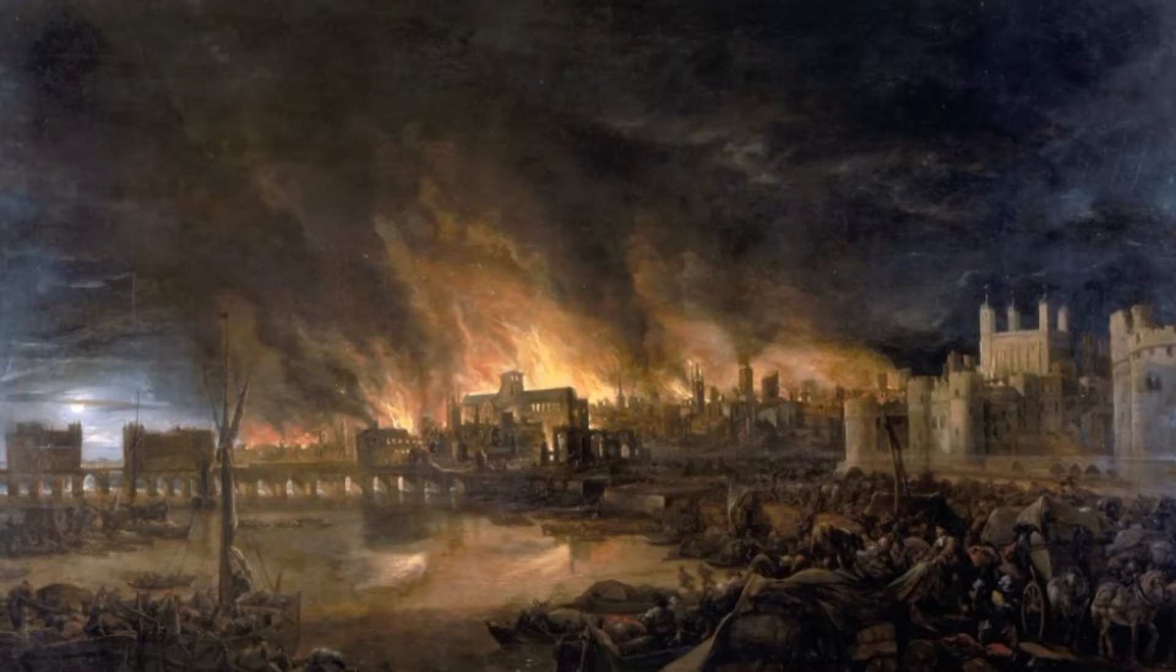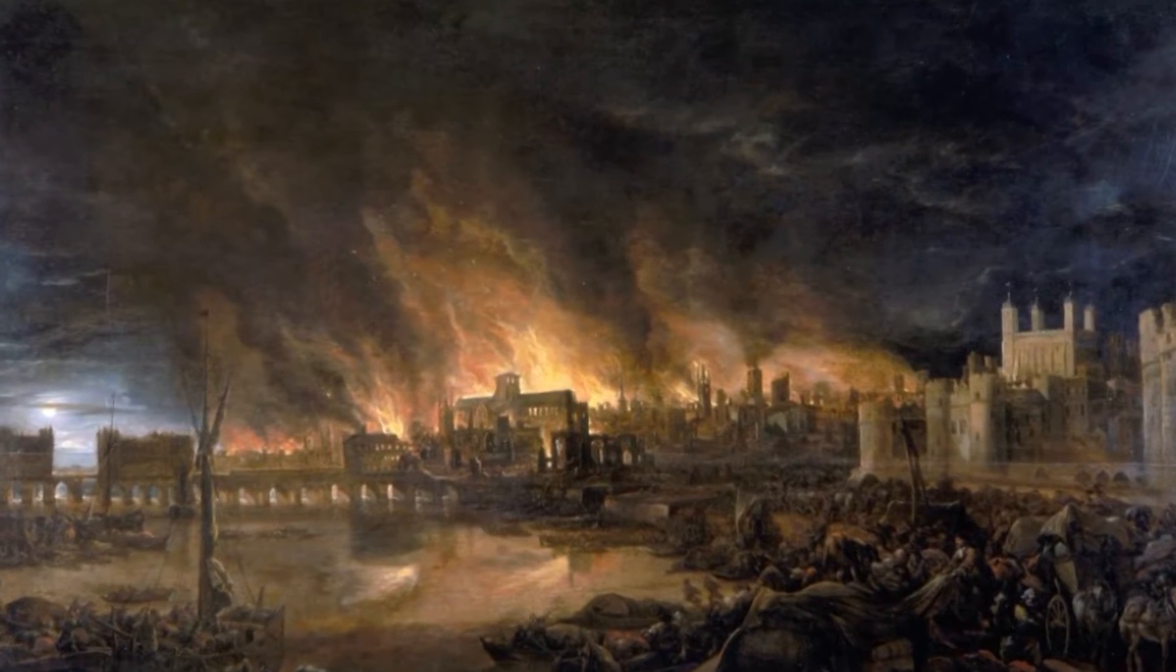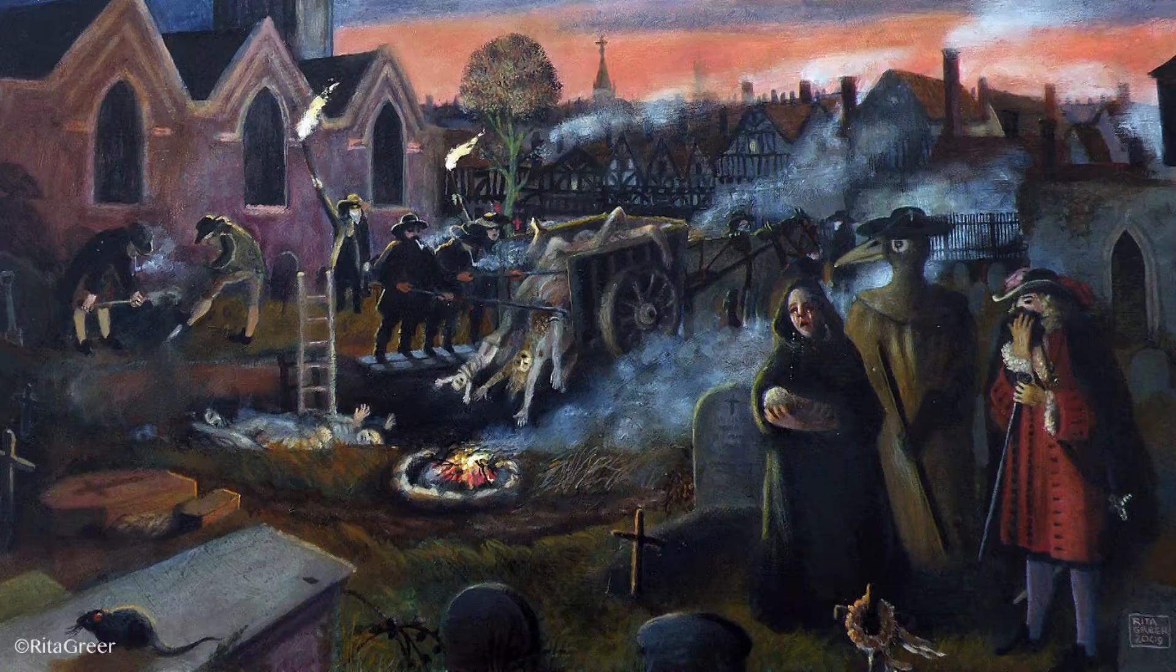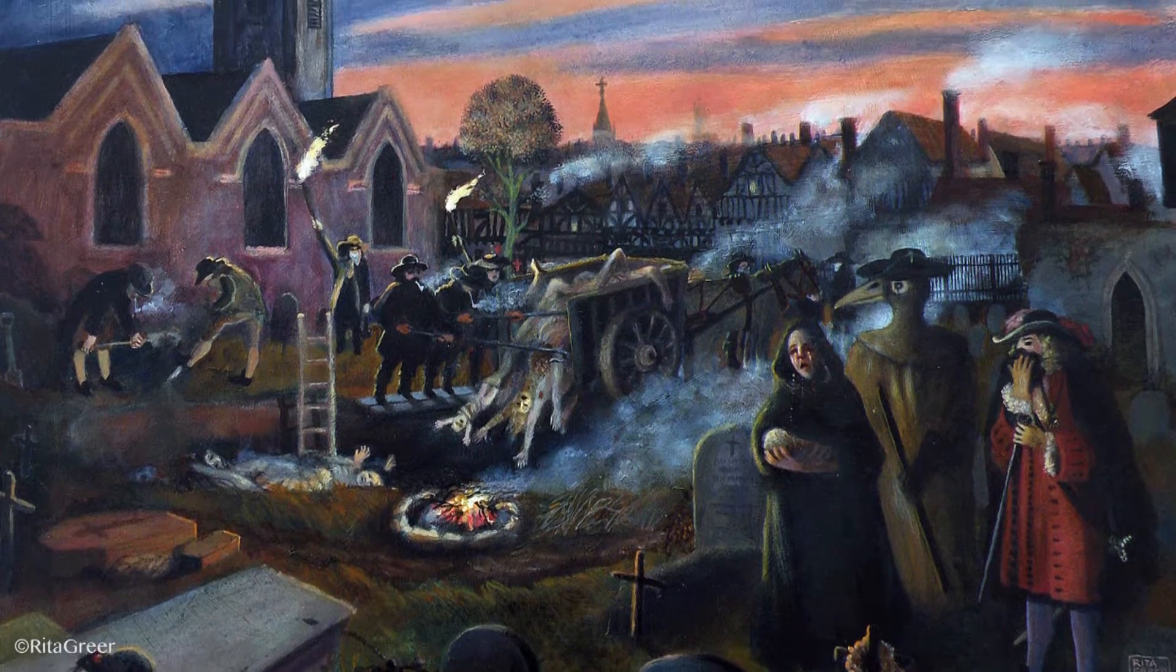1666 was the Schrödinger's cat of years, being simultaneously awful and awesome. This year in England, the Great Fire of London burned down a quarter of the people's houses, and the Great Plague swept through, killing a quarter more.